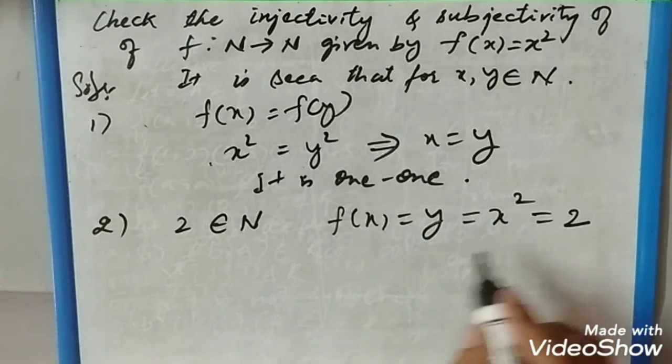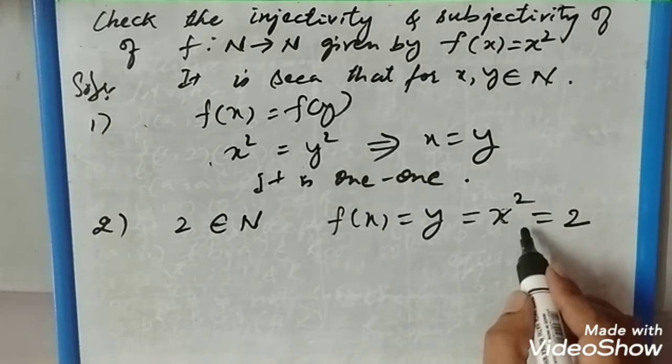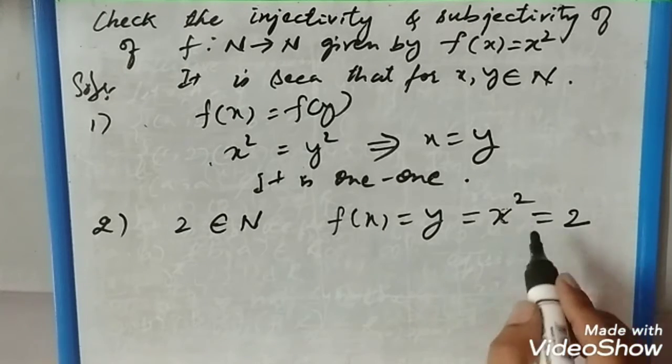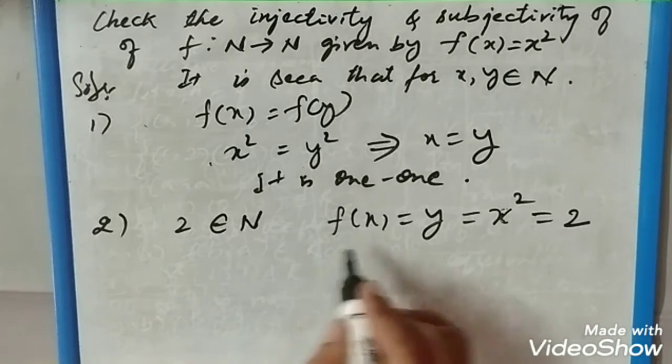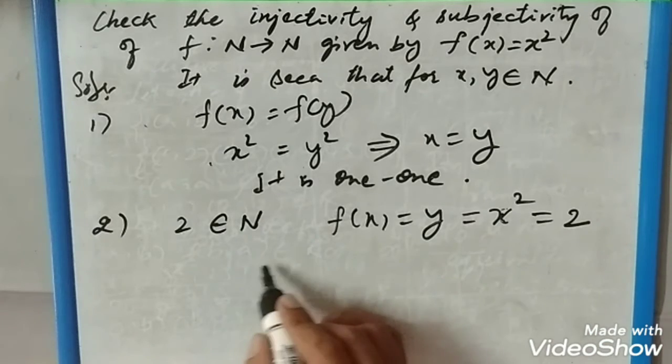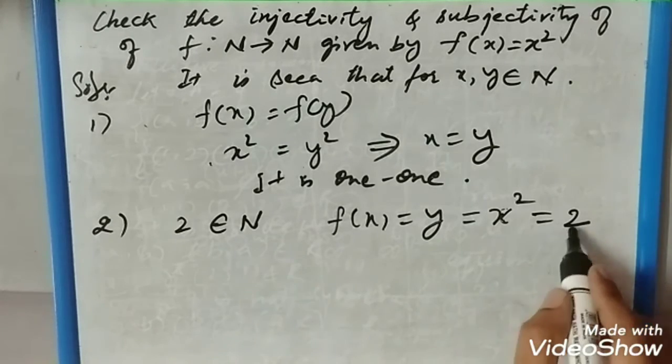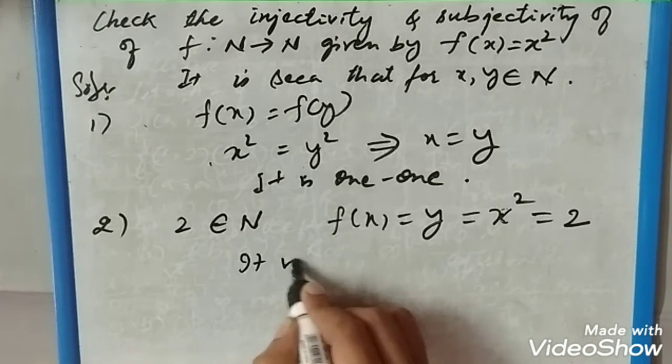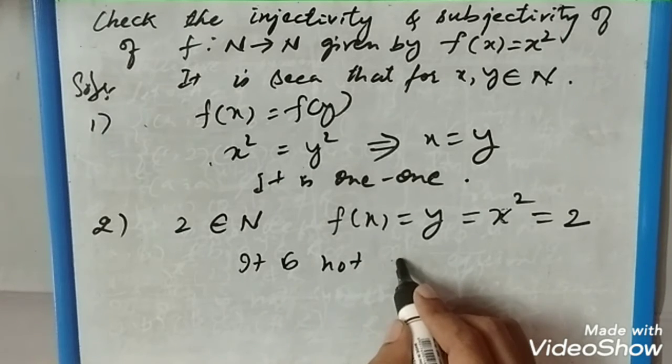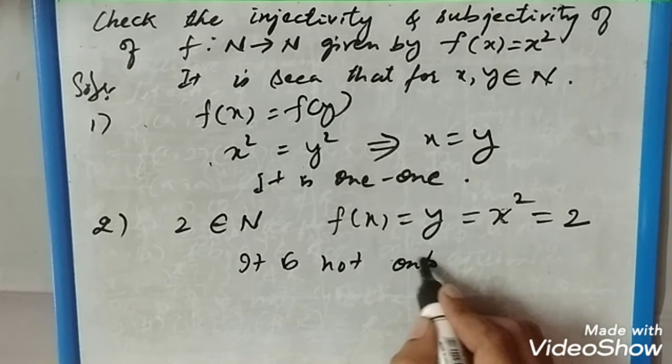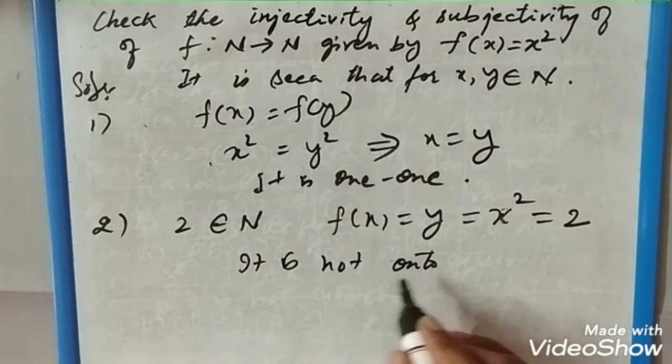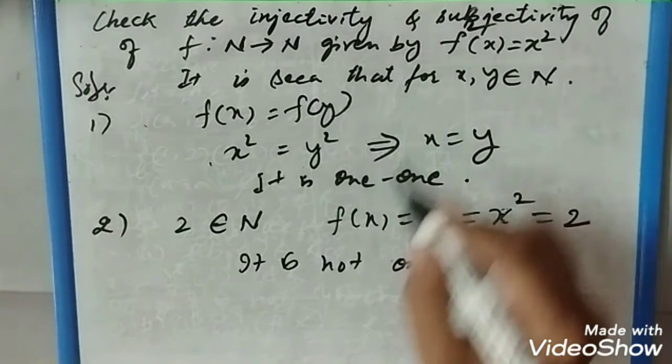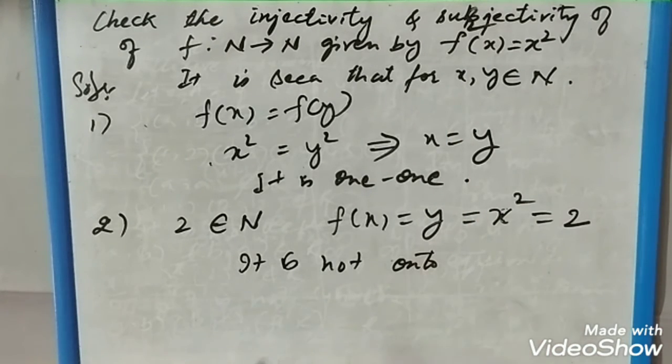There is no such natural number which has the square as 2. So that means it is not onto, or not surjective. Please share this video, subscribe to our channel, and comment.